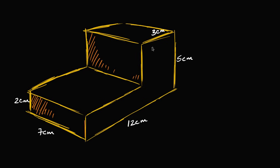There are a bunch of ways to do this, but the way I'd like to do it is to break it up into two rectangular prisms — that's really the most reasonable approach. The first prism is three centimeters wide, five centimeters high, and seven centimeters long or deep. So this one right over here.